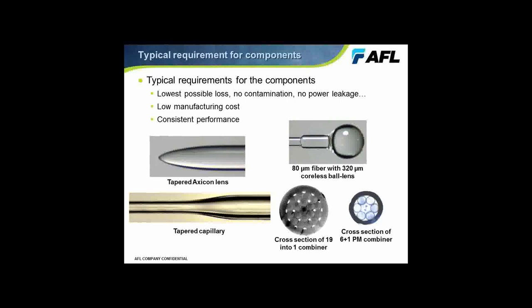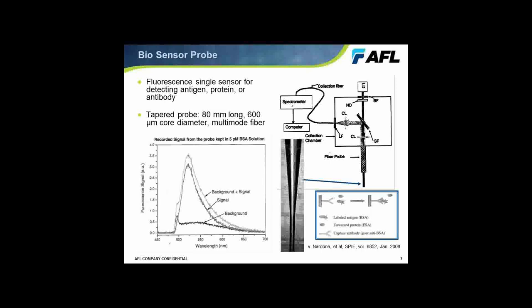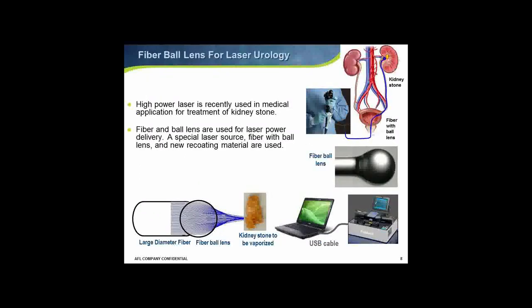Another recent driver for applications in the photonics area is the need for biomedical devices. One example is a fluorescence sensor for detecting antigens, proteins, or antibodies — in this case the most notable feature is a fiber taper. Very common in biomedical applications are ball lenses and lens assemblies. The example shown here is for power delivery to deliver laser power directly to a kidney stone to break it apart. Ball lenses are used in many other applications, for example in OCT.